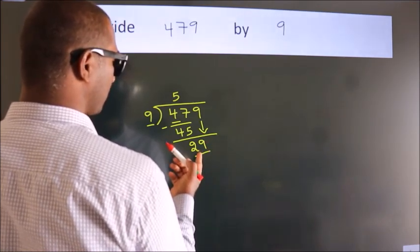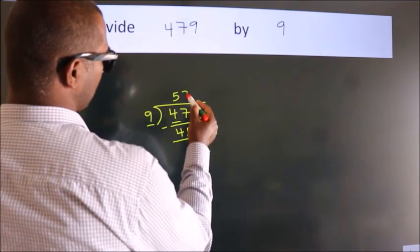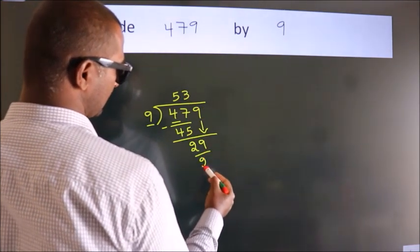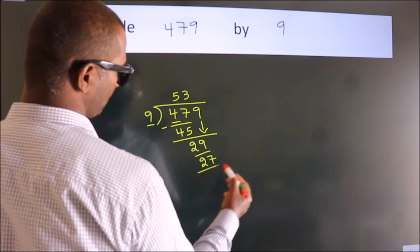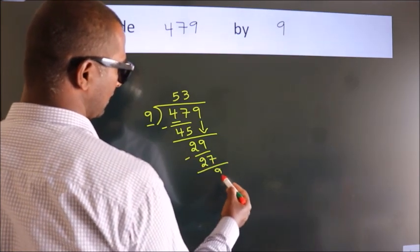A number close to 29 in 9 table is 9 threes, 27. Now, we subtract. We get 2.